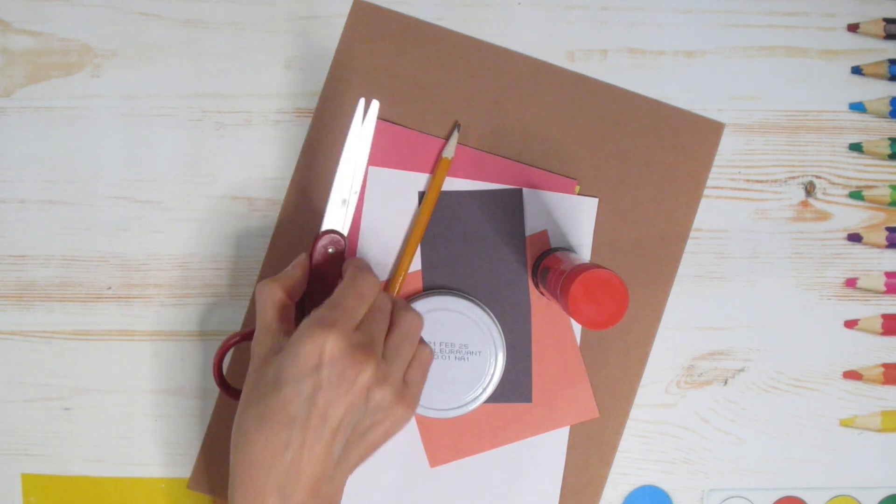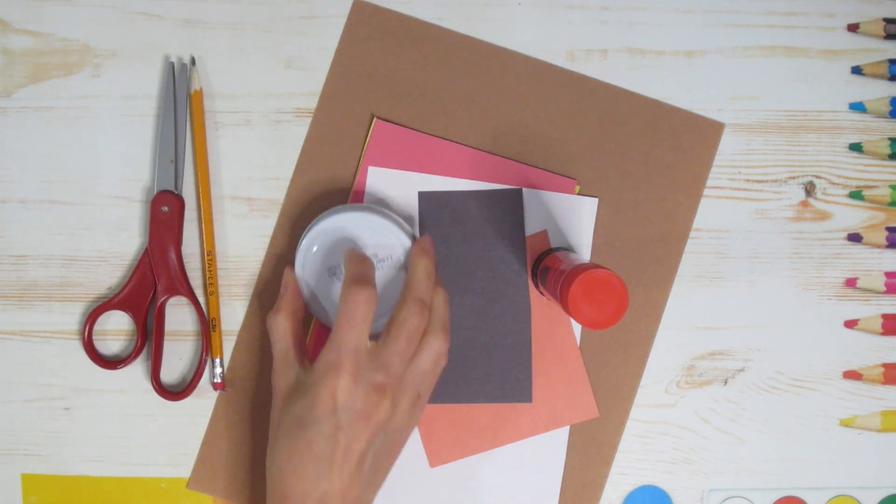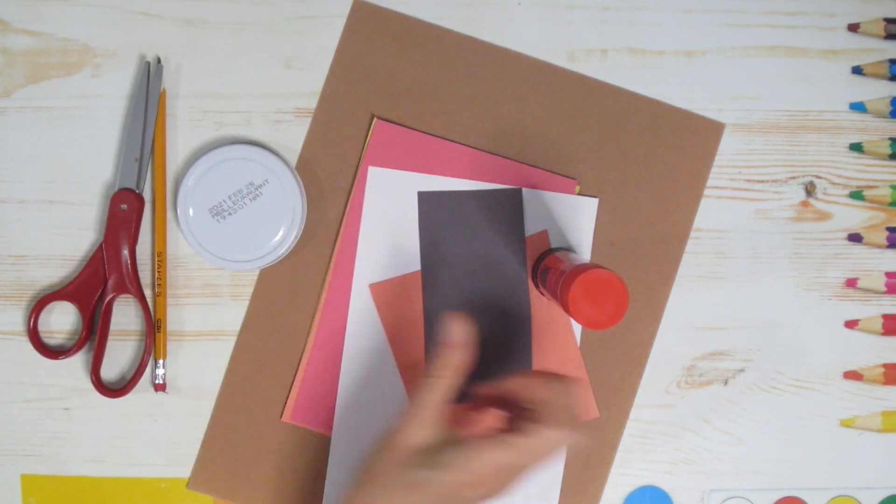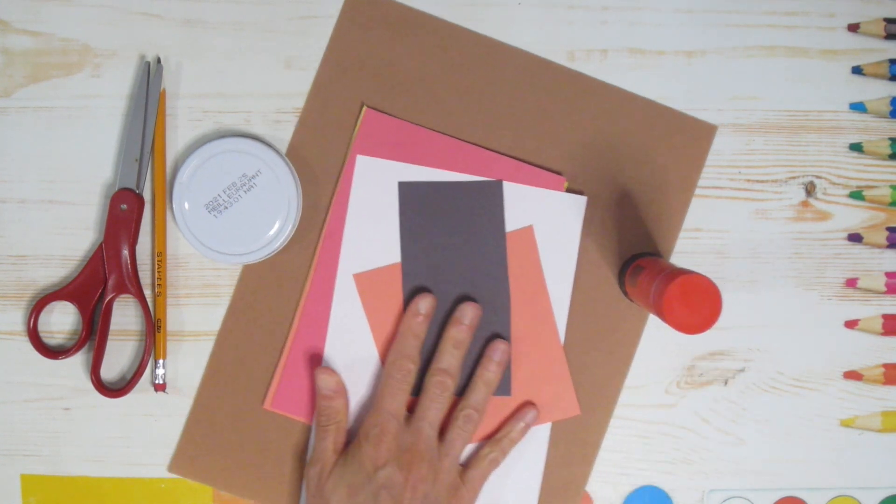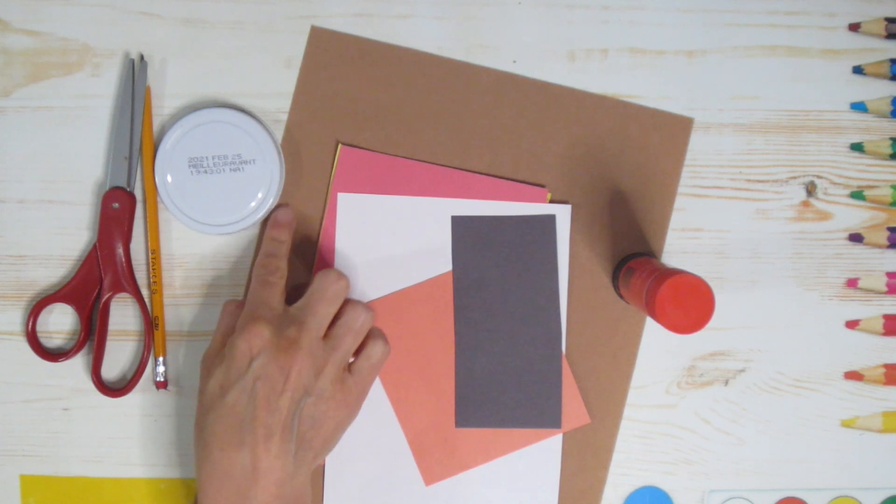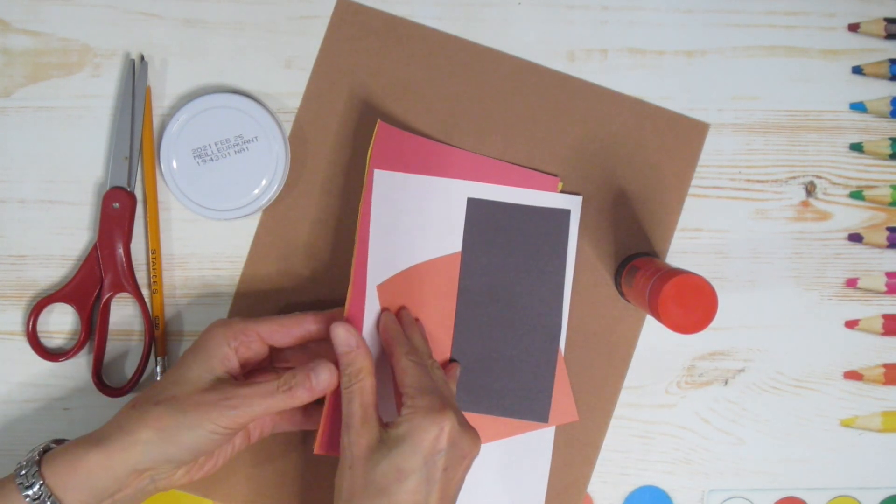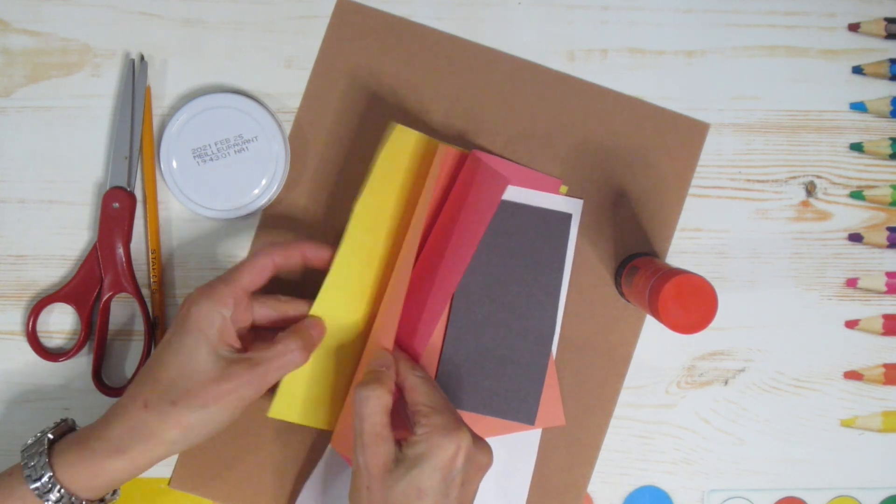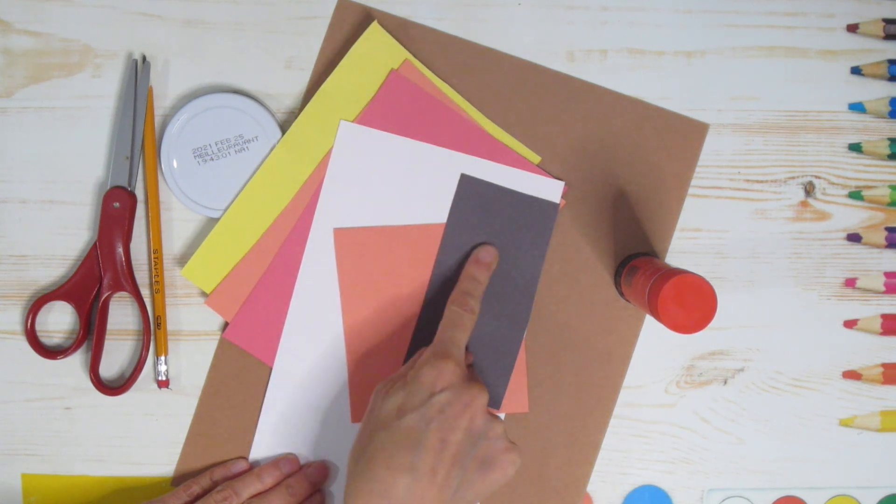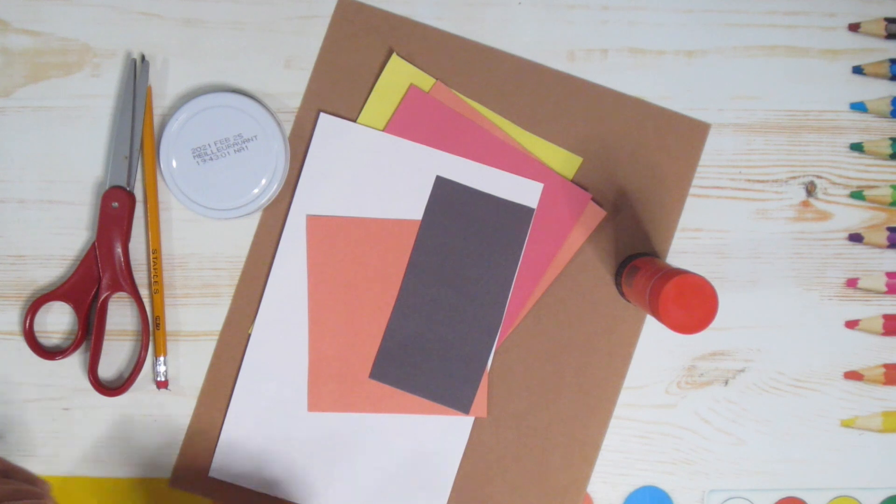The supplies you're going to need are scissors, a pencil, a circular tracer (this will help you but it's very helpful though not required), some glue, and some paper. Here I have brown for the band of my hat. Then I have different fall colors: yellow, orange, and red. I have another orange for my nose, some white for my eyes, and some black for my pupils. So grab what you need and let's get started.